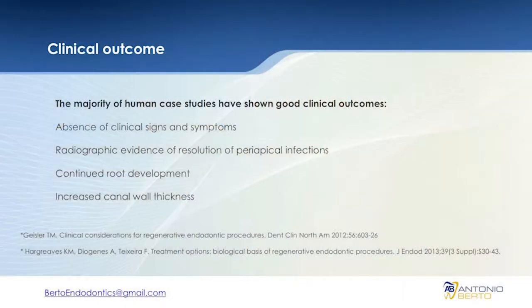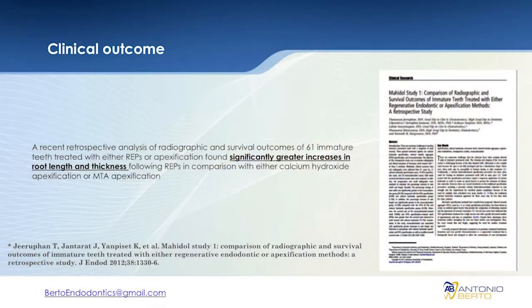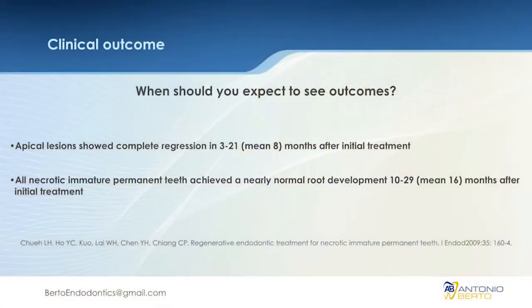As far as outcomes, most of the studies we have are unfortunately case series, so the level of evidence is not great. But in most of these studies, what we found is absence of clinical signs and symptoms, radiographic evidence of resolution of infection, and continuous root development with increased wall thickness. A very recent study shows significantly greater increase in root length and thickness when comparing this treatment to both calcium hydroxide and MTA apexification. There's a variation of three to 21 months for the lesion to heal, with an average of eight months, and root development typically happens within the first two years.